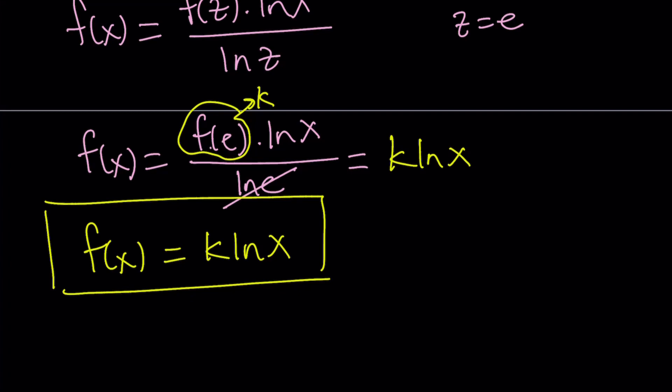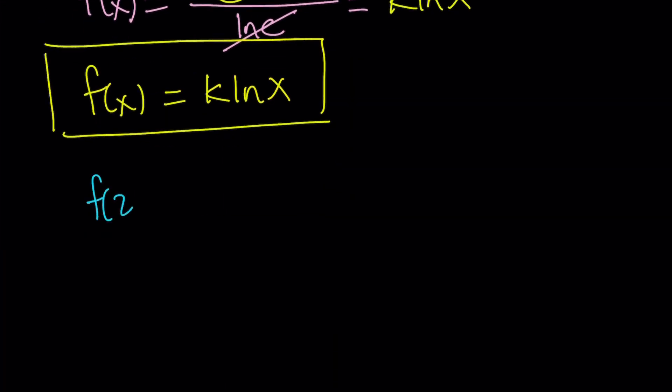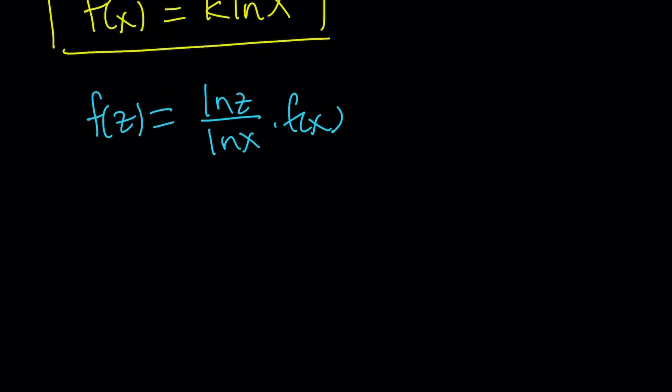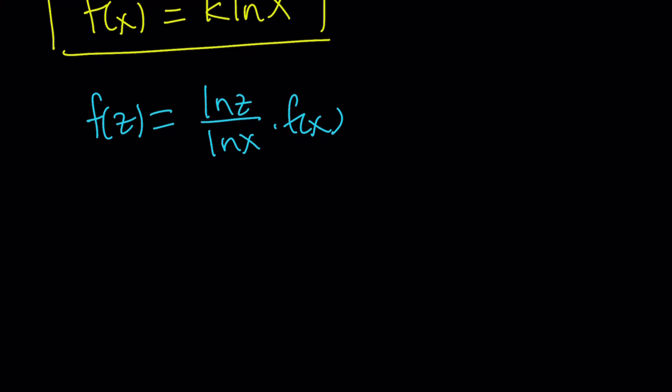So we got this expression, f of z equals ln z over ln x times f of x. And at this point, I want to do something a little different. I want to put the f's together.